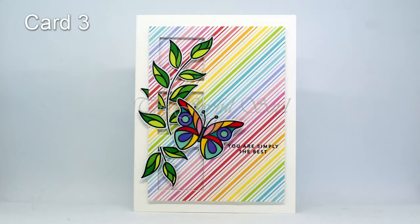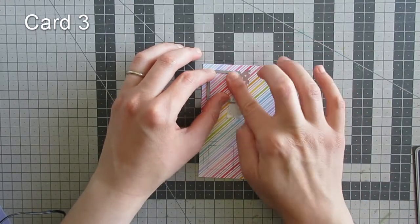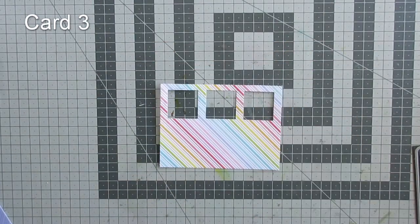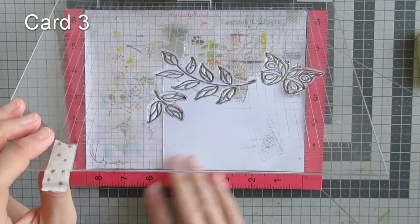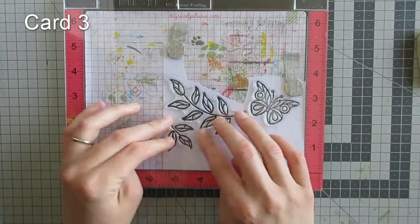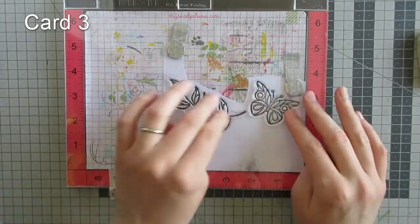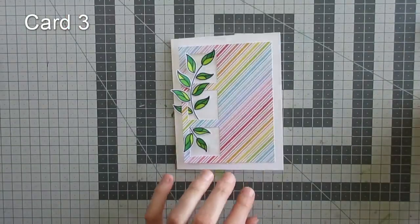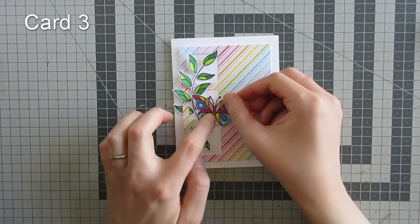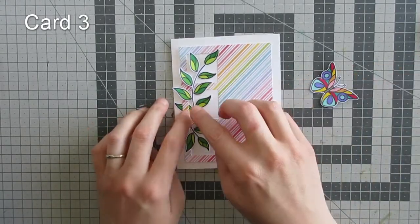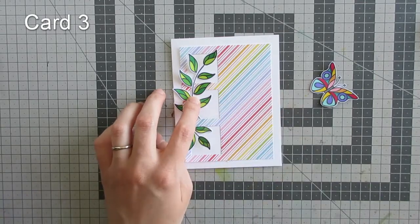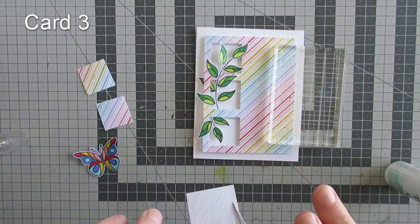My third card uses that panel of patterned paper that I cut away from the first card. I die cut three little squares from one side of it, then stamped both leafy branches and one butterfly, colored them, and fussy cut them.